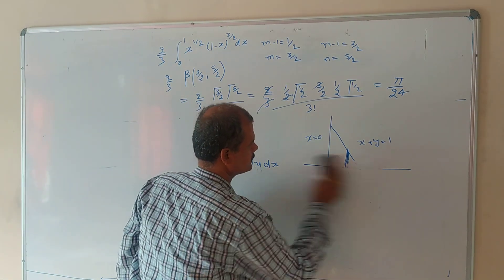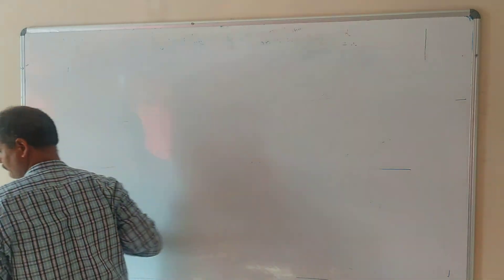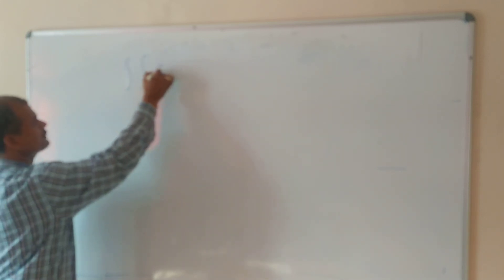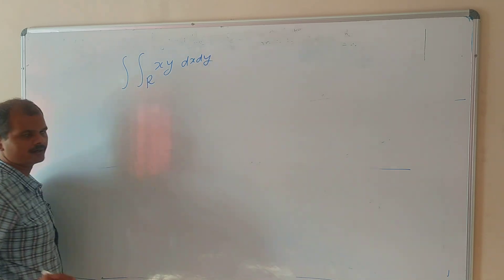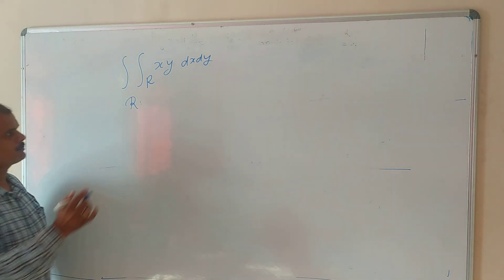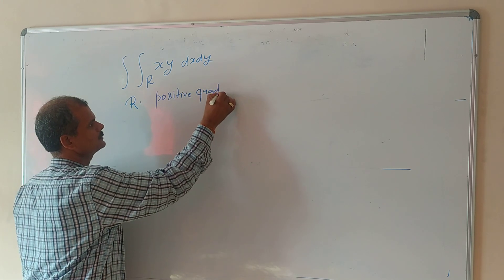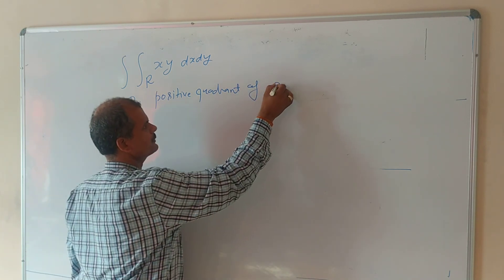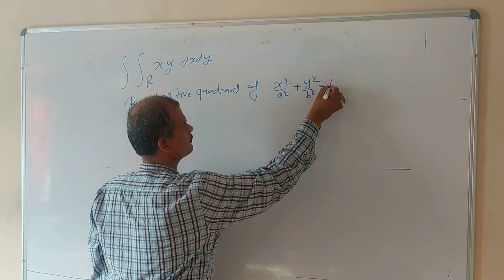Let us take one more problem based on the same beta and gamma function — the second problem. We will evaluate this integral using the beta-gamma function: the integral of xy dx dy over the region R, where R is the positive quadrant (first quadrant) bounded by the ellipse x²/a² + y²/b² ≤ 1.